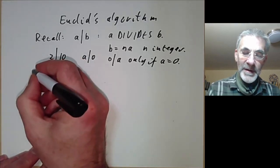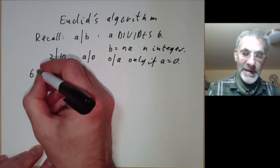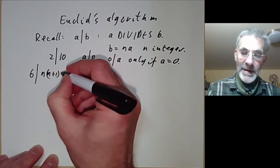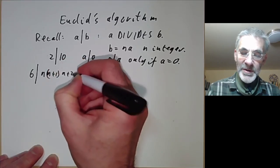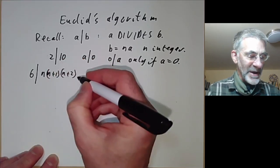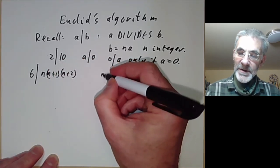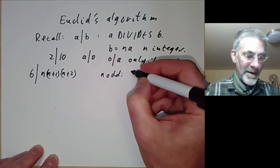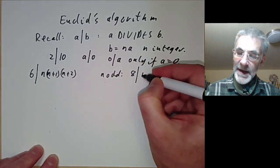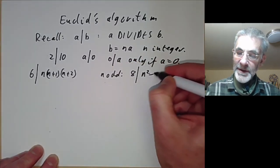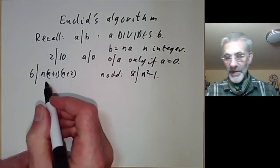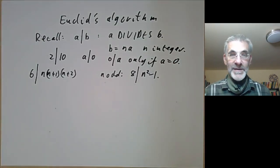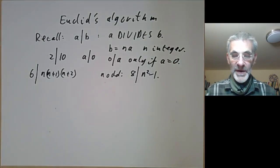Some other examples: 6 divides n(n+1)(n+2) for any integer n, and if n is odd then 8 divides n² − 1. If you haven't seen either of these before, they make good exercises.